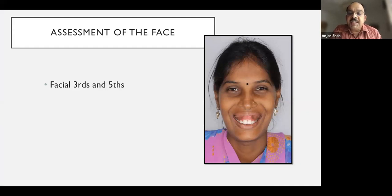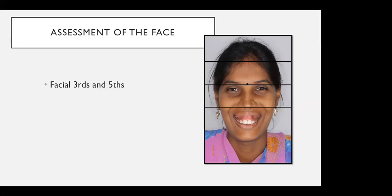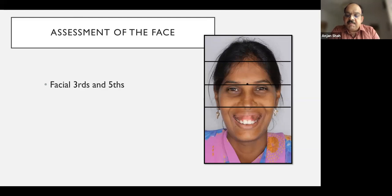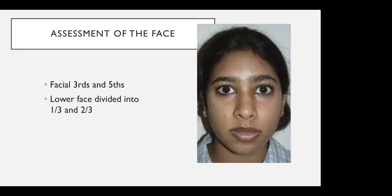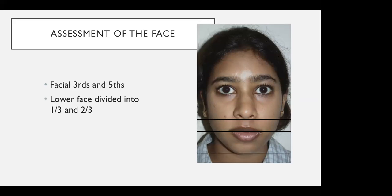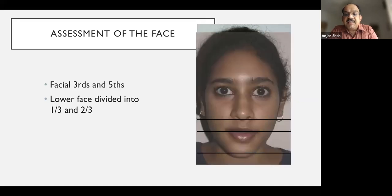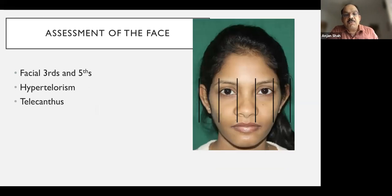Coming to patient assessment, we need to analyze the patient scientifically and objectively so we don't miss anything. I tell my trainees to look at patients in terms of thirds and fifths — dividing the face into different parts to figure out where the problem lies. For example, dividing the face into three parts makes it obvious that this patient's problem is in the lower third, which can be further divided into two-thirds and one-third for better analysis.